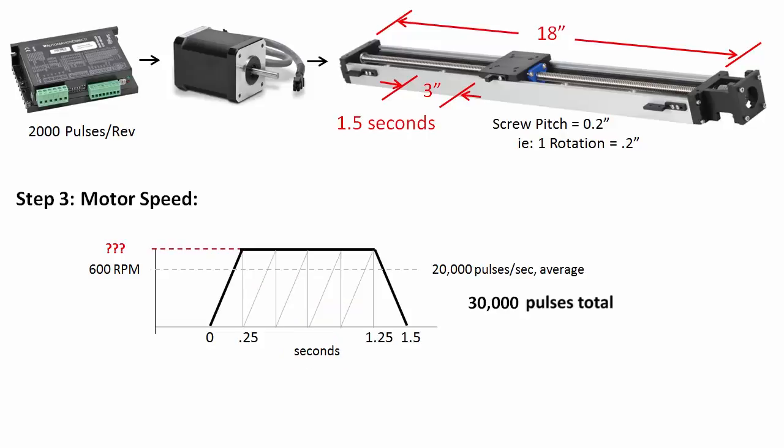And if we subdivide it into equal triangles like this, we see that there are 10 equal triangles so each triangle would get 1 tenth of the 30,000 pulses or 3,000 pulses each.